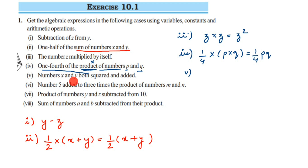The fifth question: numbers x and y both squared and added. First we square both numbers — squaring means multiplying the number by itself — so we get x squared and y squared. Then we add them. The answer is x² + y².